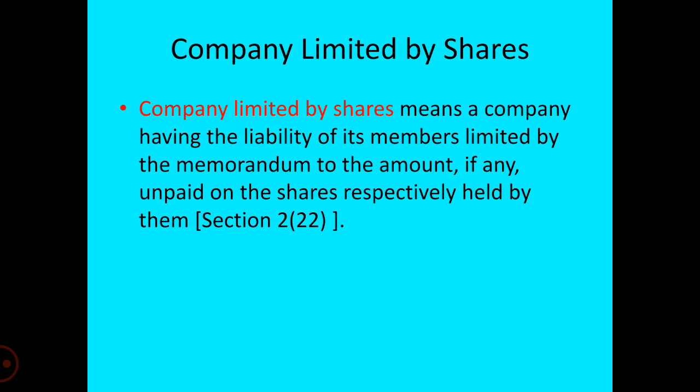A person can become a member by subscribing to the memorandum of association, by a deemed agreement in writing to become a member, by making an application to the company for the allotment of shares, by an instrument for transfer of shares as a transferee, or by holding shares of a company in whose name they are entered as a beneficial owner in the records of the depository.